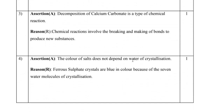Question 3: The assertion is — decomposition of calcium carbonate is a type of chemical reaction. The reason is — a chemical reaction involves the breaking and making of bonds to produce new substances. Both the assertion and reason are correct, and the reason correctly explains the assertion, so A is the answer.